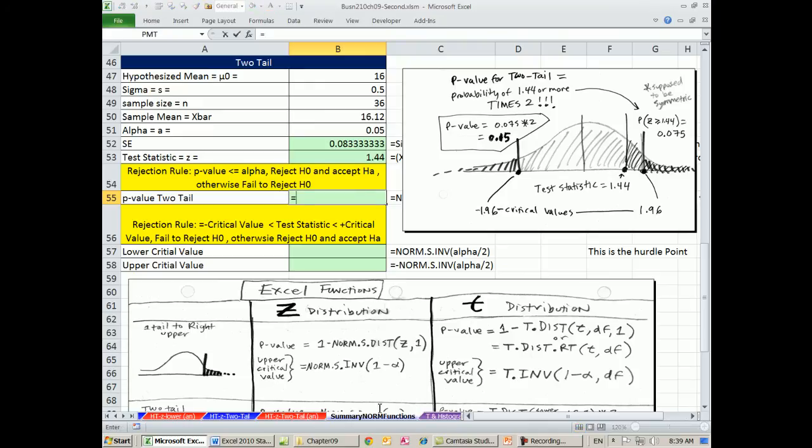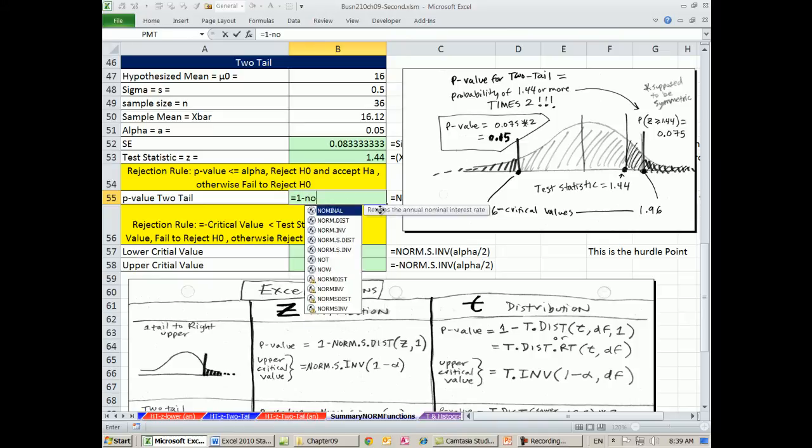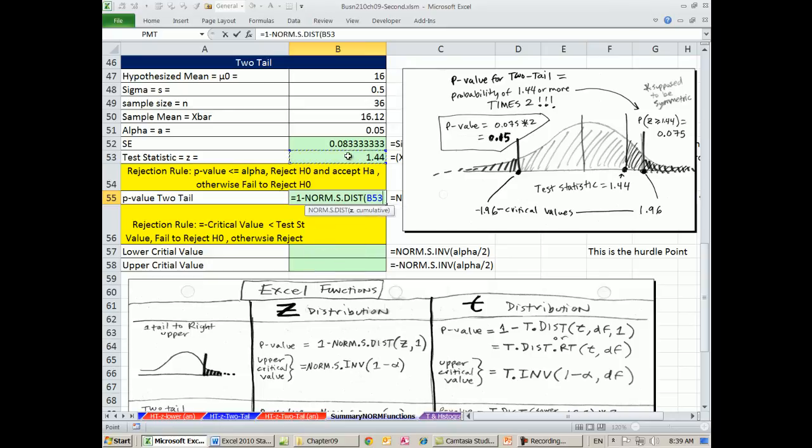Equals, and this is on the upper end. So if we put in our 1.44 to give us a probability from here all the way up to that, so we need to 1 minus NORM.S.DIST. We have our z comma 1. Now this will give us the probability on the upper end, but we need to double it. So I'm going to put parentheses around this and multiply it by 2.